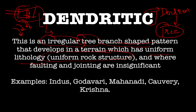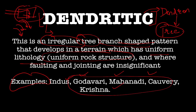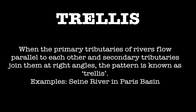Which rivers follow the dendritic pattern? We see the tributaries of the Indus, Godavari, Mahanadi, Kaveri, and Krishna — the Deccan rivers. Many websites claim the dendritic pattern is found only in North India, which is absolutely false, because the Deccan rivers Mahanadi, Godavari, Krishna, and Kaveri all follow the dendritic pattern.